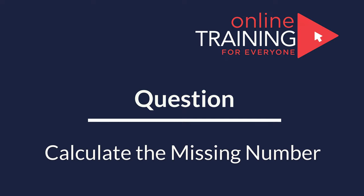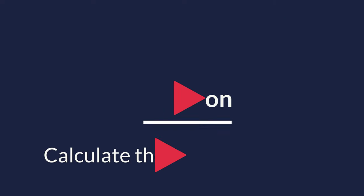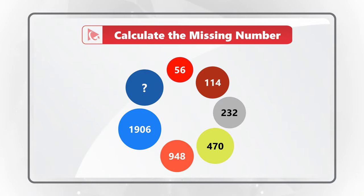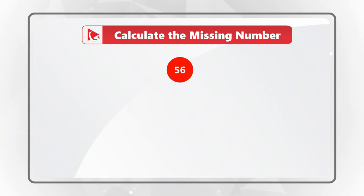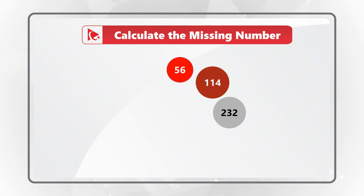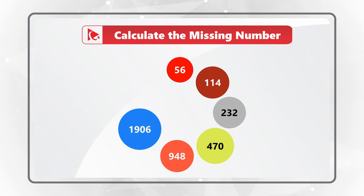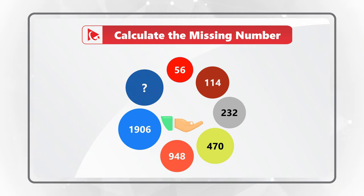Here is an extremely tricky question. You're presented with a sequence of circles organized in a circle. The sequence starts with a red circle containing 56, then 114, 232, 470, 948, 1906, and then a circle with the missing number. You need to select from four choices: choice A 3812, choice B 3824, choice C 3820, and choice D 3800.